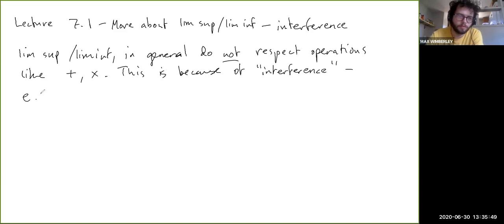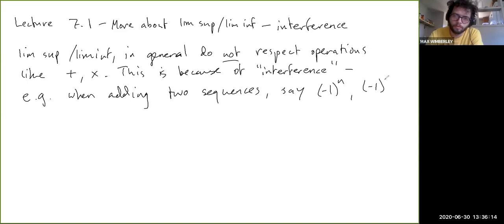For example, we could take two sequences, like we could take negative one to the n, or negative one to the n plus one and add them together. These two sequences are sort of out of phase with each other. And so when you add them, they just cancel each other out.